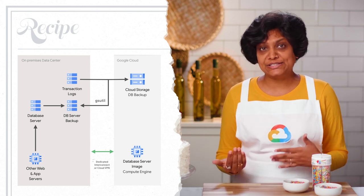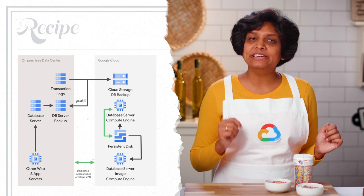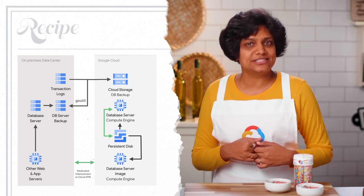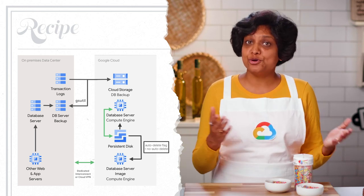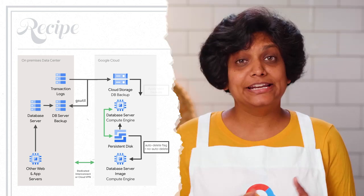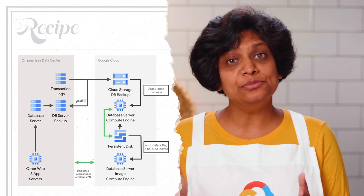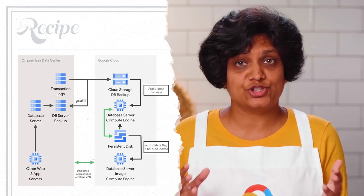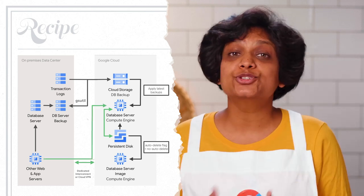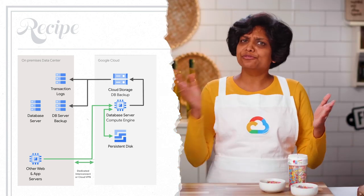They would create a custom image of the database server on Google Cloud with exactly the same configurations as the one on-premise. Now, when the time comes to recover the database to the DR site on Google Cloud, it's easy for Main Street Style. They would start a minimally sized instance from the custom image and attach any persistent disks needed. Set the auto-delete flag to no auto-delete so that the persistent disk will not be inadvertently deleted, since that could be a disaster. Then apply the latest backup file and transaction logs that were copied to Cloud Storage. Replace the minimal instance with a larger instance capable of accepting production traffic. And finally, switch the clients to point to the recovered database in Google Cloud. When the production environment on-premise is up and running, they would just have to reverse the steps.